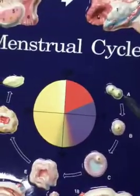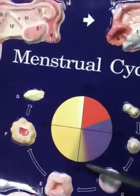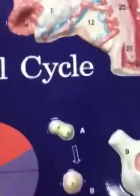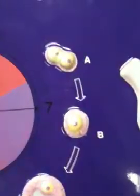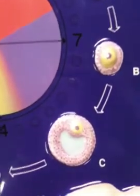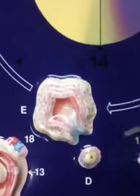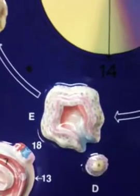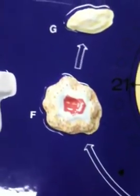And here's our cycle — it's 28 days: 7 days, 14 days, 21 days, 28 days. A: primary oocyte or ripening egg. B: secondary follicle. C: graafian follicle. D: secondary oocyte. E: ovulating follicle showing ruptured stigma. F: corpus luteum or yellow body. G: corpus albicans or white body.